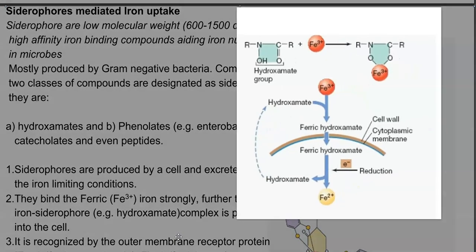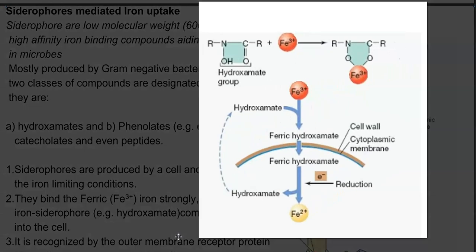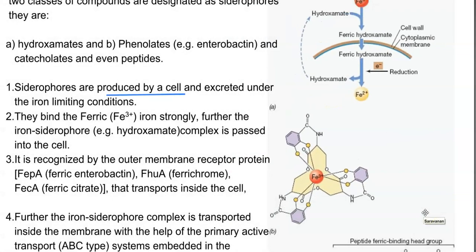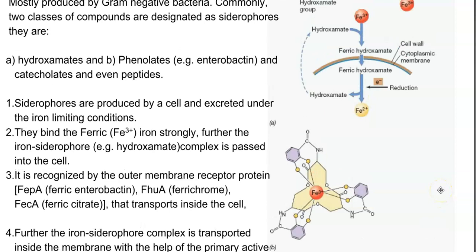Looking at the diagram, you can see how a siderophore — for example, a hydroxamate-type siderophore — acquires ferric iron from the aerobic environment, and how it is transported inside the cell and reduced into ferrous iron. In short, siderophores are produced by the cell and excreted under iron-limiting conditions. They bind strongly to ferric iron. The iron-siderophore complex is then recognized by an outer membrane receptor protein which helps in taking the siderophore inside the cell. Examples of these proteins are ferric enterobactin, ferric chrome, and ferric citrate.